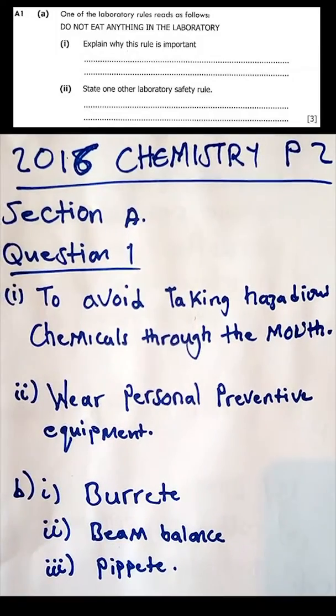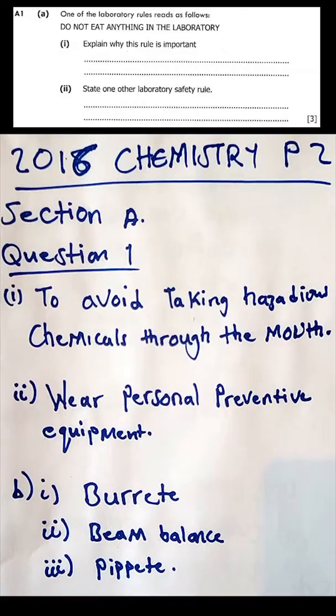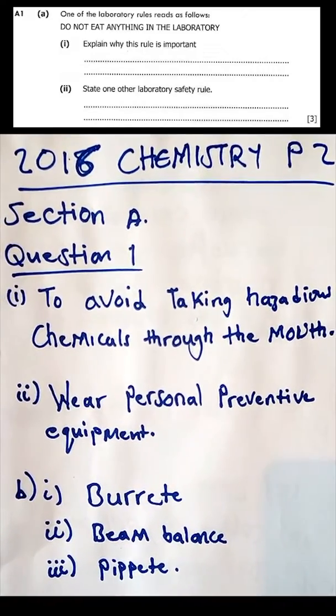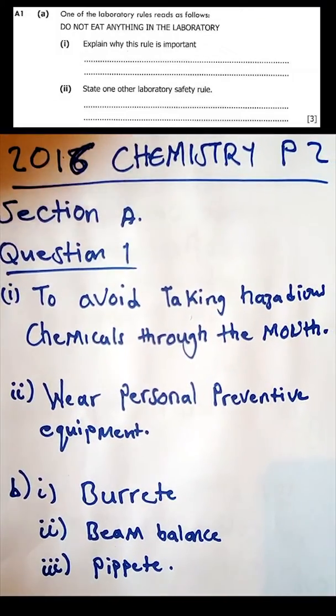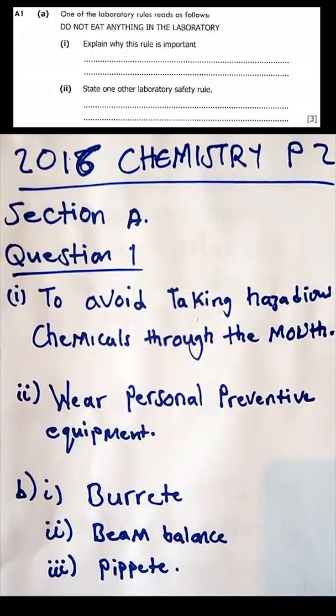Question 1a: one of the laboratory rules reads as follows - do not eat anything in the laboratory. Explain why this rule is important. This rule is important to avoid taking hazardous chemicals through the mouth.